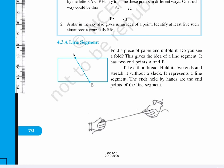4.3 A line segment. Fold a piece of paper and unfold it. Do you see a fold? This gives the idea of a line segment. It has two endpoints, A and B.